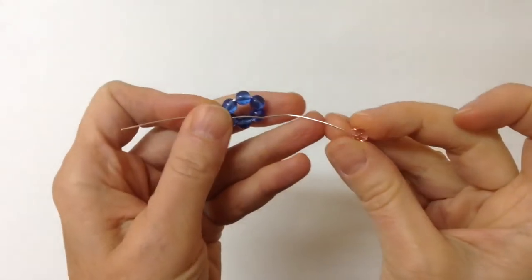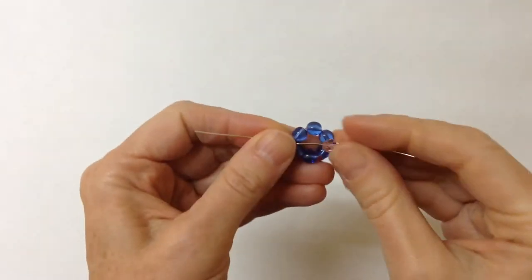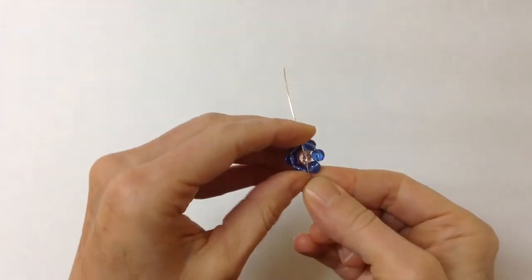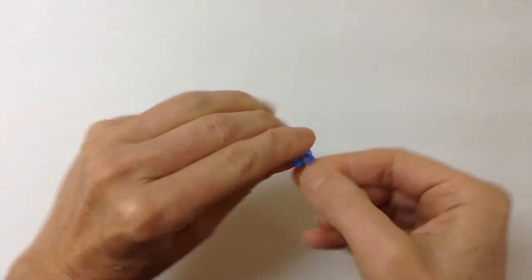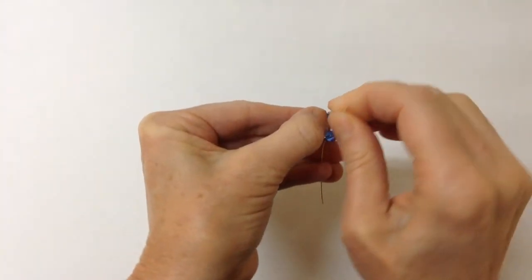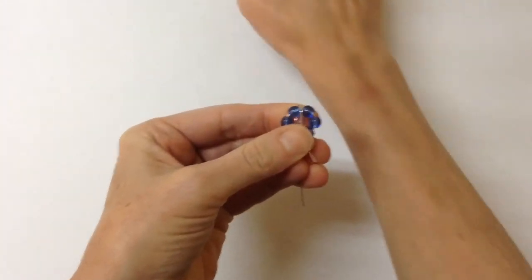So now you're going to take your center bead, this one's the faceted glass bead, you're going to just stick it on that wire and squeeze the beads in so it surrounds it, and then pull this wire to the back.